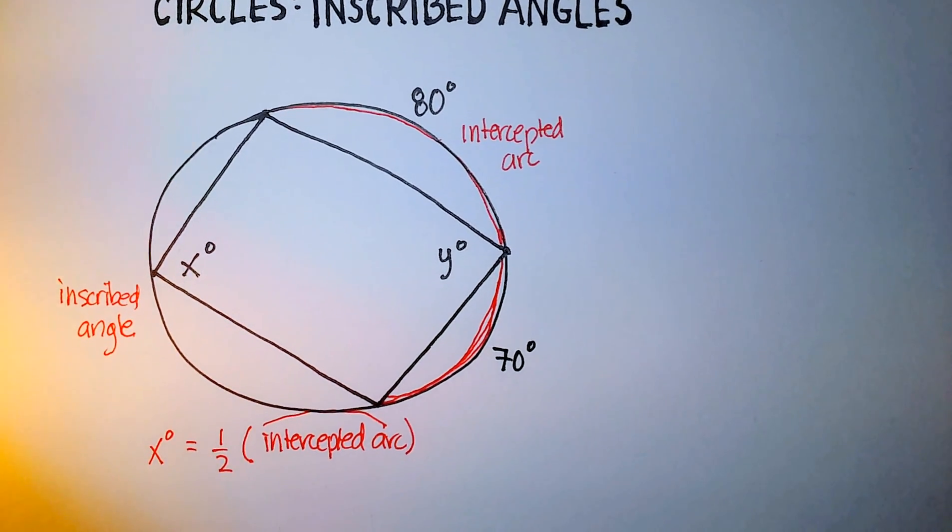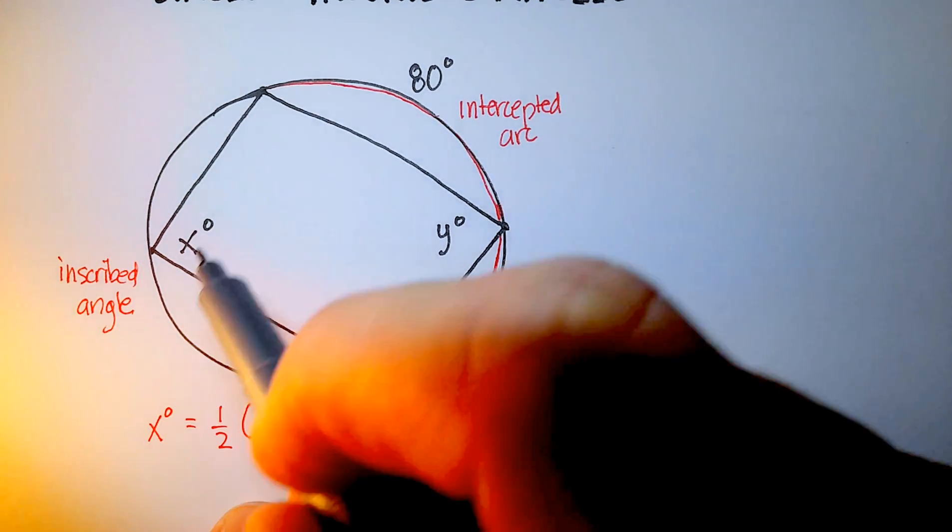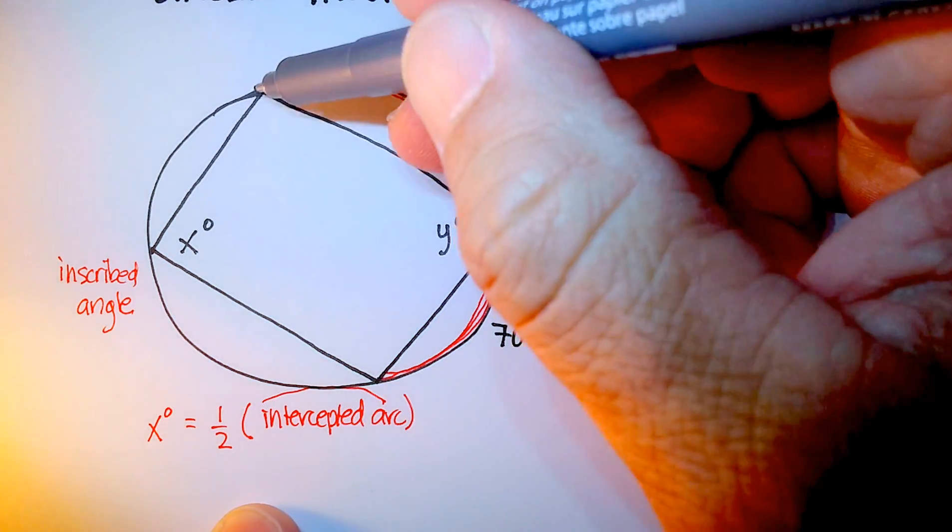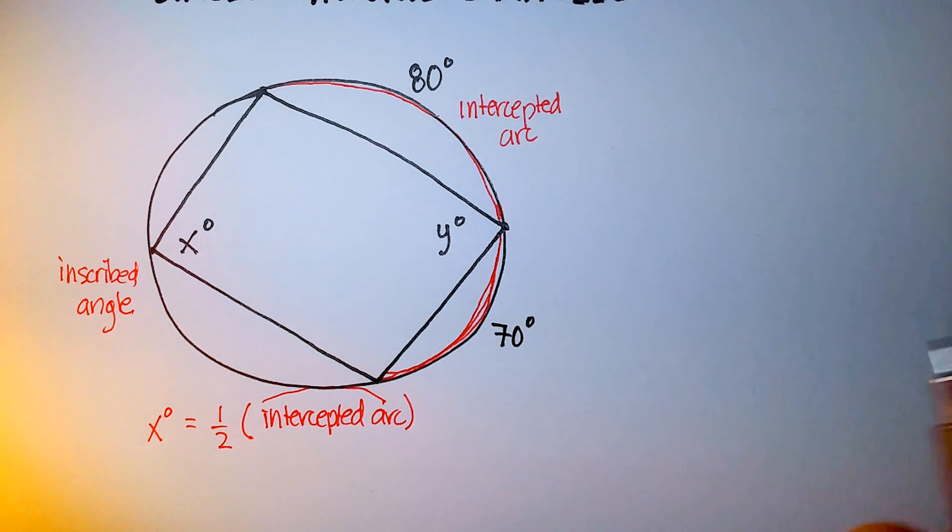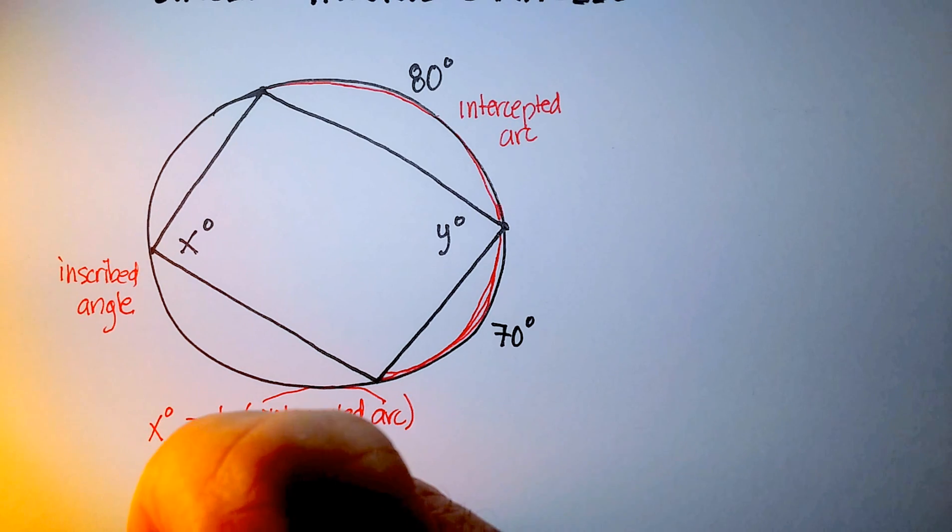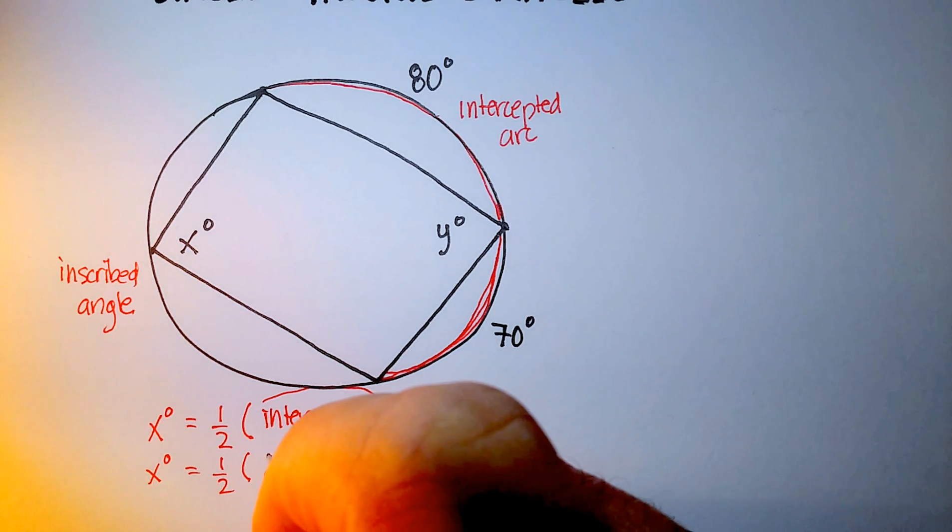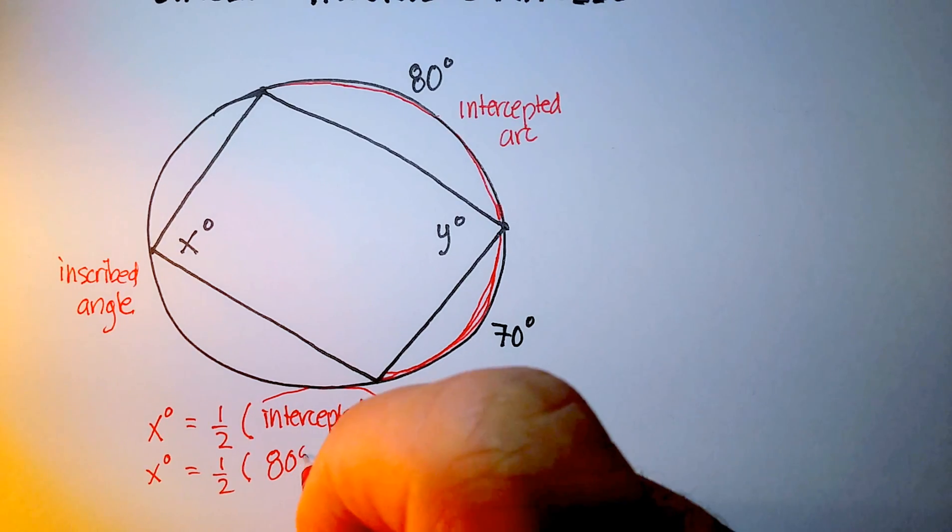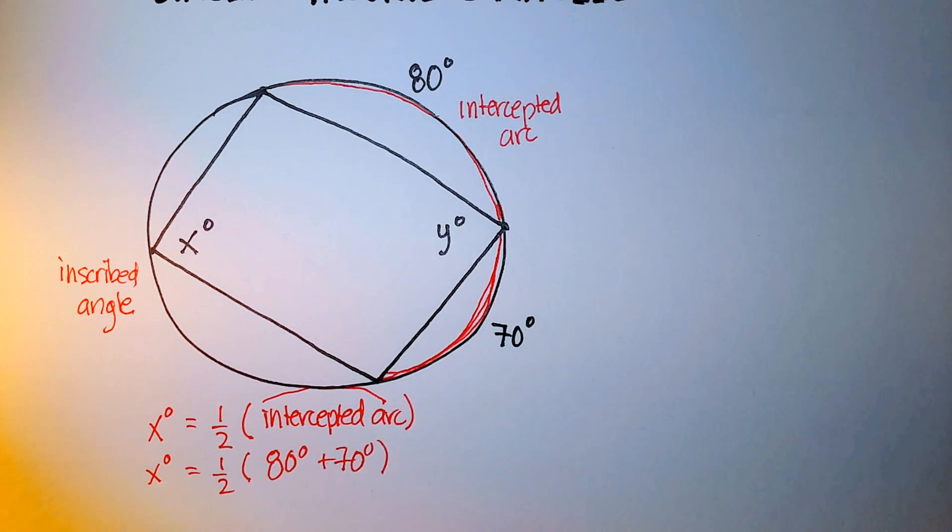Now let's talk a little bit more about the actual numbers involved here. The intercepted arc is going to be 80 plus 70. So let's go ahead and put that in here, and x is equal to one half, 80 plus 70, that's equal to 150.